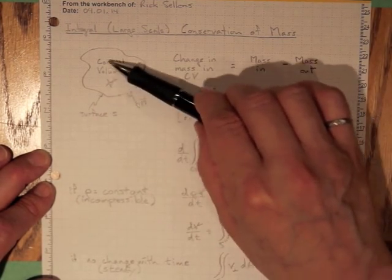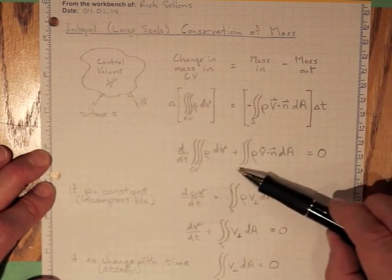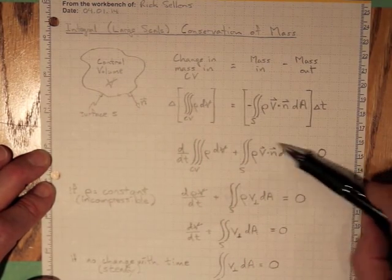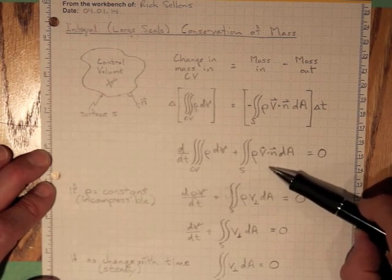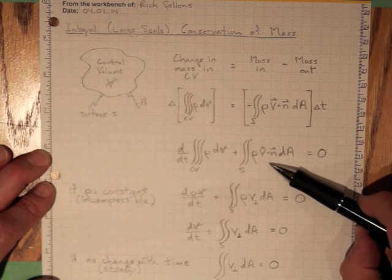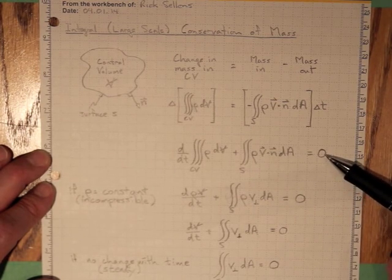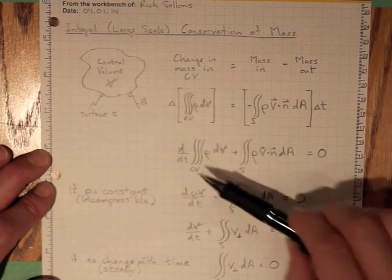So what this is saying for the control volume is that whatever goes in either stays in and increases the mass so that this is a positive rate of change with time, or comes out. And this accounts for both the stuff that comes in and the stuff that goes out because the sign changes with the V dot n term. And that must be equal to zero, the combination of the two.